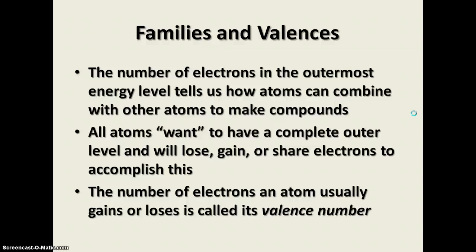Now, if atoms had desires, they would want to have a complete outer energy level. And in order to gain this, they're going to either lose electrons or gain electrons or share electrons. The number of electrons that an atom usually gains or loses is called its valence number. And it's going to be expressed as a positive or negative number. So if you can imagine, if it can have a total of eight electrons, if there are fewer than four, it's going to have a tendency to lose electrons. If there are more than four, it's going to have a tendency to gain electrons. And if there are four, it can go either direction. They can either gain or lose. And all of these are able to share electrons to accomplish that full valence shell.